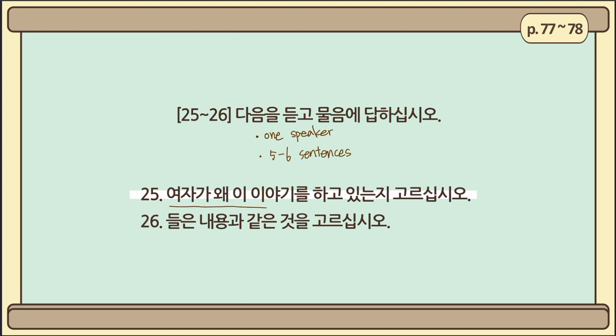The first question is: 여자가 왜 이 이야기를 하고 있는지 고르십시오. 왜 means 'why.' Choose the reason why the woman is saying the following — it asks you to find the objective of the passage. The second question asks you to choose the answer that correctly reflects the contents of the passage, which is the same type as question type number 5. So our focus will be on the objective of the passage you hear, the first one.